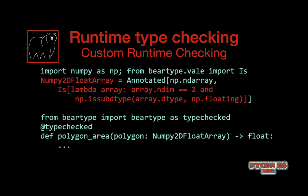BearType also allows you to add custom types where you can have logic written in Python to see whether something is of a particular type. This is similar to type-guarded functions but expressed in a different manner. For example, this is a type that a NumPy array is a float.